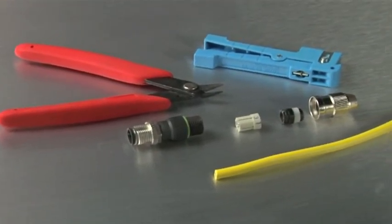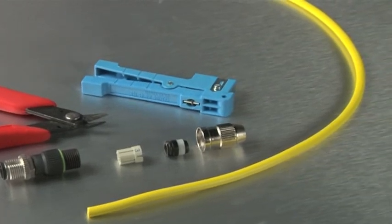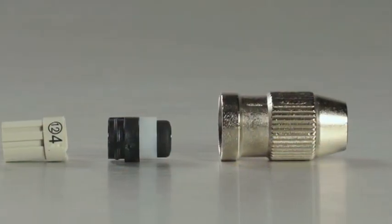To begin, let's identify the components. Starting from the cable end, there are four components to an IDC.